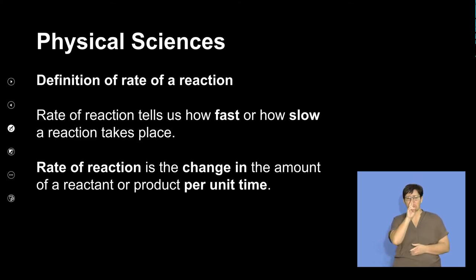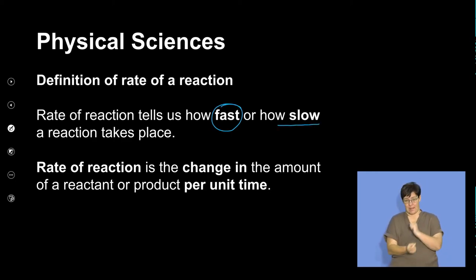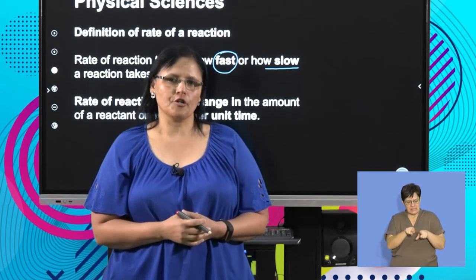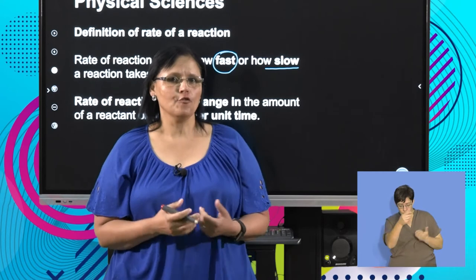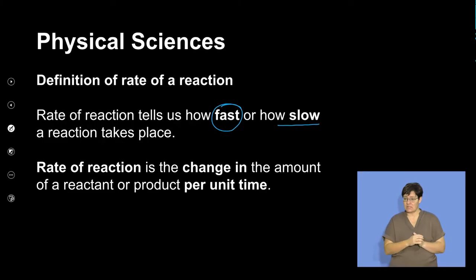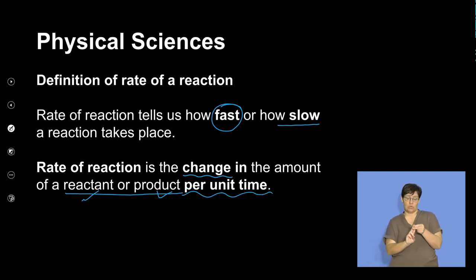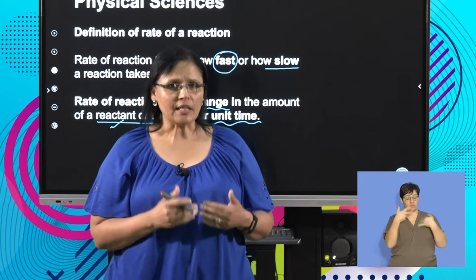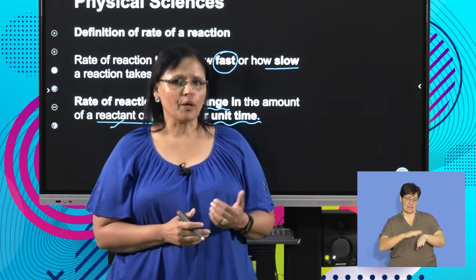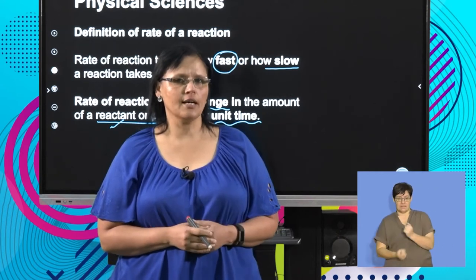When we look at rate of reaction, the rate of reaction is how fast or how slow a reaction is. There is a definition in the guidelines document that you must study for your exam: the rate of a reaction is the change in the amount of your reactant or product per unit time. Whenever you answer anything on rates of reaction, you need to refer to per unit time.